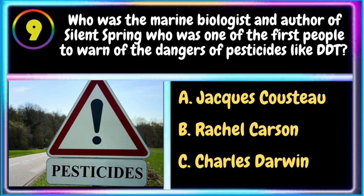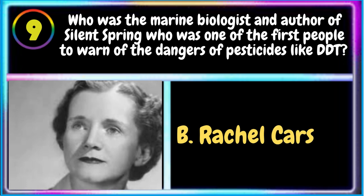9. Who was the marine biologist and author of Silent Spring who was one of the first people to warn of the dangers of pesticides like DDT? A. Jacques Cousteau B. Rachel Carson C. Charles Darwin. B. Rachel Carson is the correct answer.